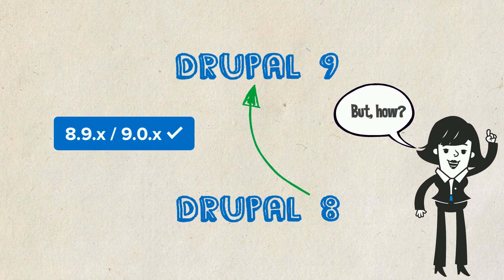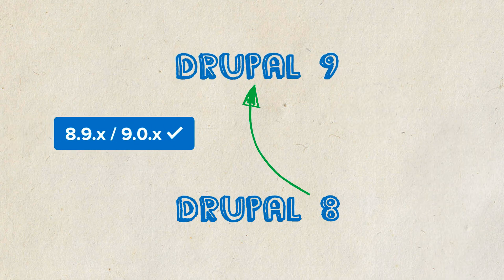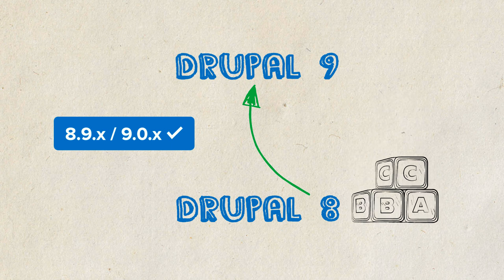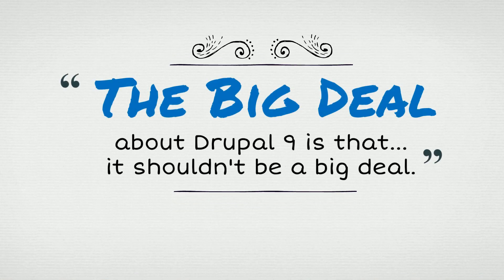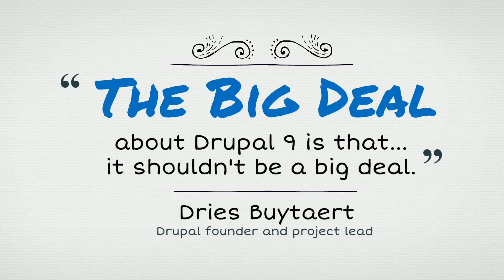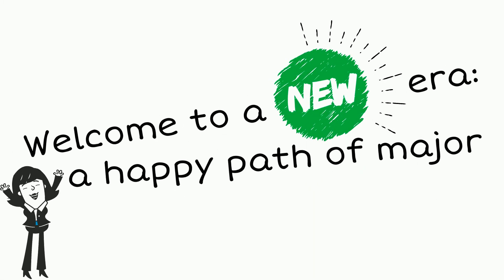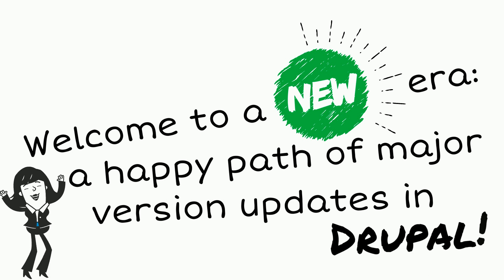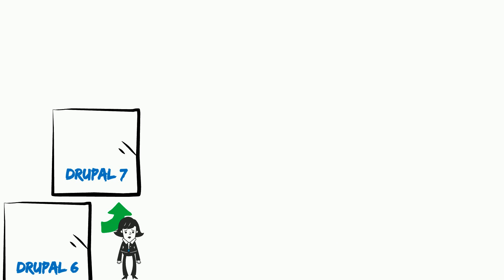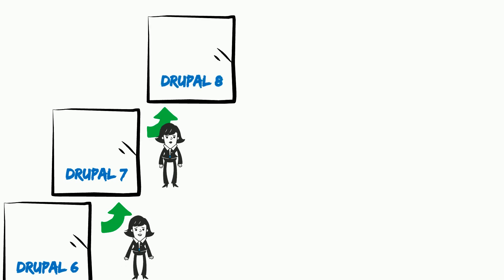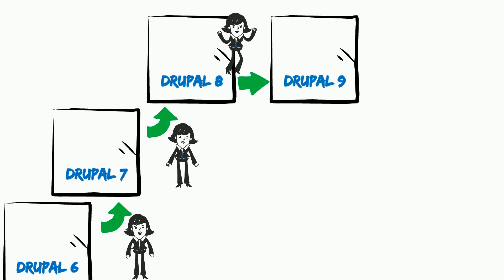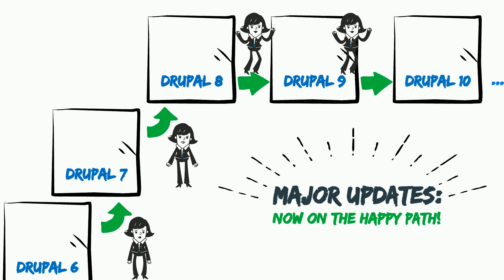But how? To answer this question, let's take a look at how Drupal 9 was built on Drupal 8. Dries Beiter, Drupal founder and project lead says, the big deal about Drupal 9 is that it shouldn't be a big deal. Welcome to a new era, a happy path of major version updates in Drupal. Adopting Drupal 9 or even Drupal 8 means putting your site on track for easier to adopt innovation and never having to deal with a painful upgrade again.